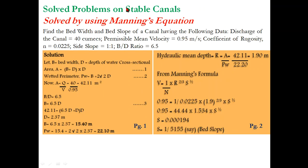The next approach uses Manning's equation for a stable unlined non-regime channel. Again, a set of parameters and B/D ratio are given, making it easy to find the solution. The procedure converges in the same way — expressing velocity and area through Manning's equation and the continuity equation.